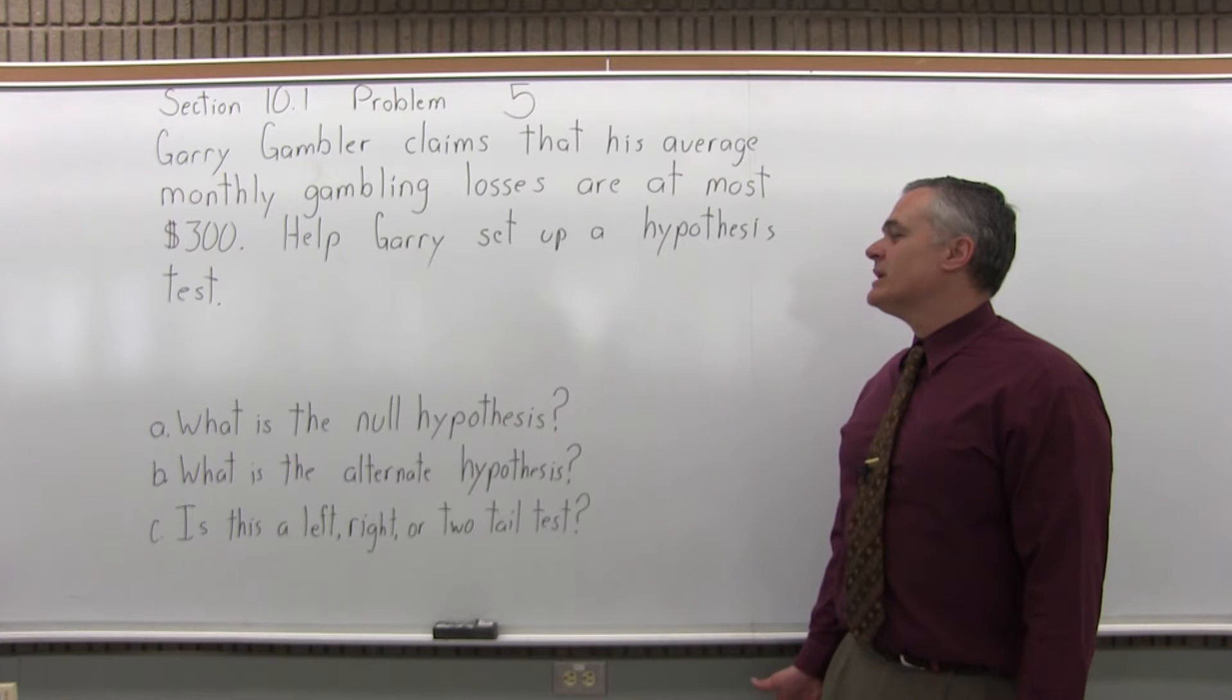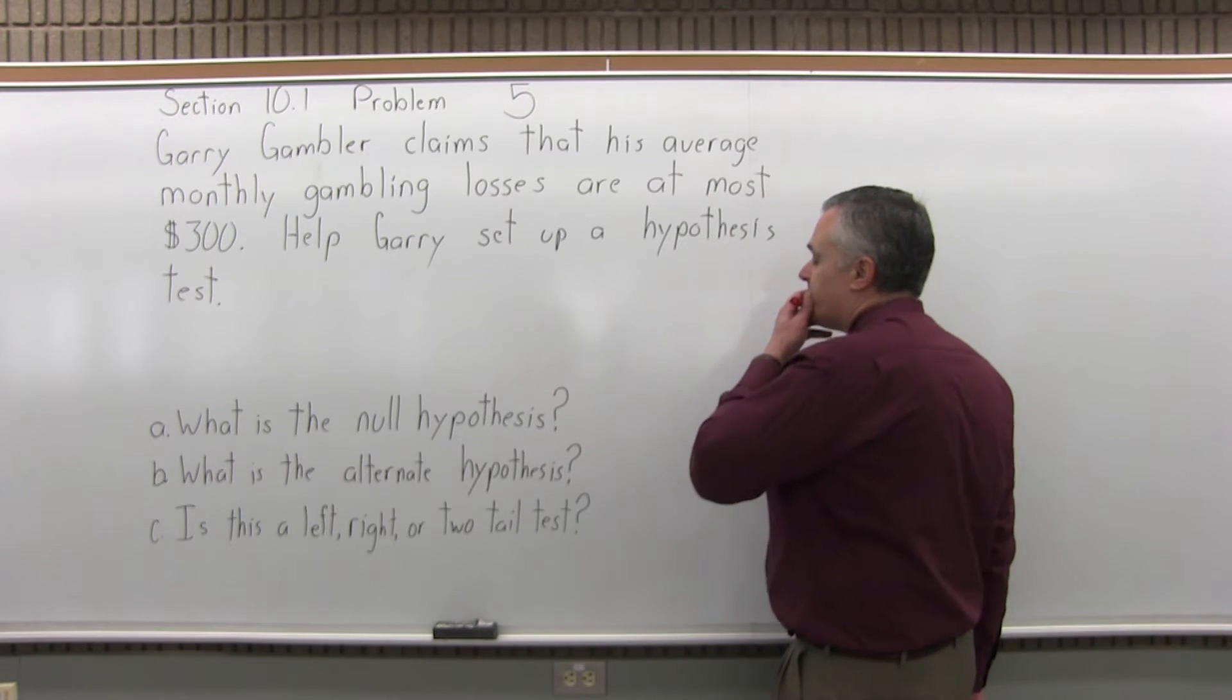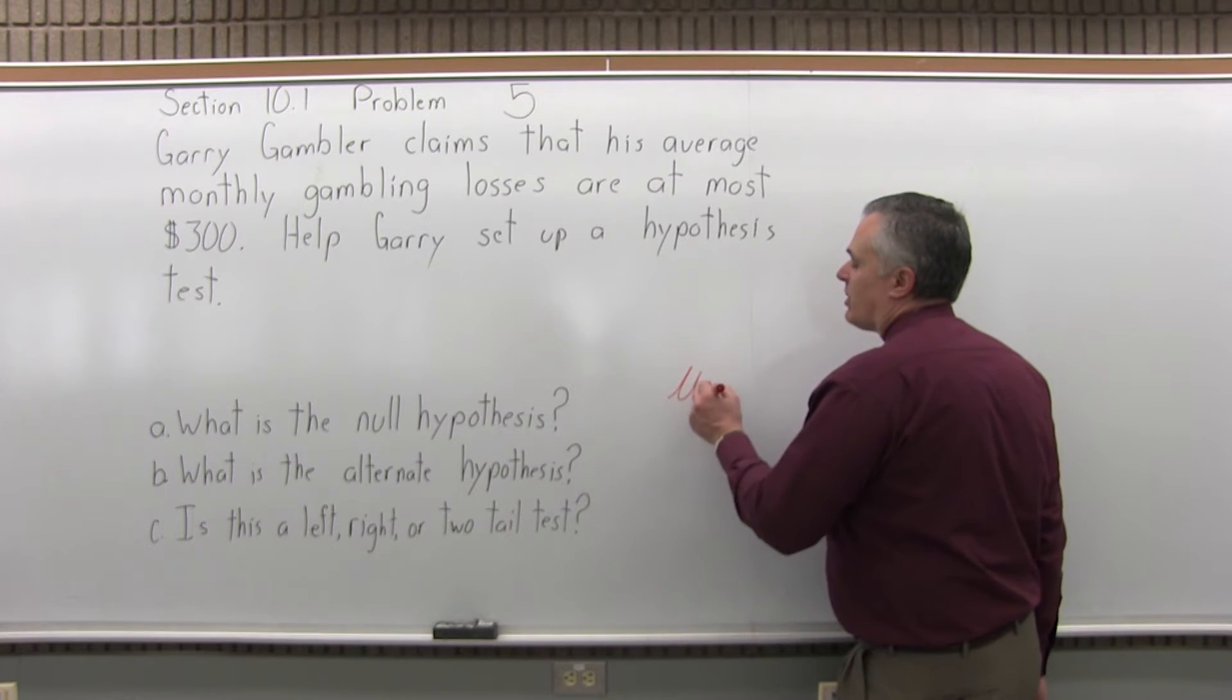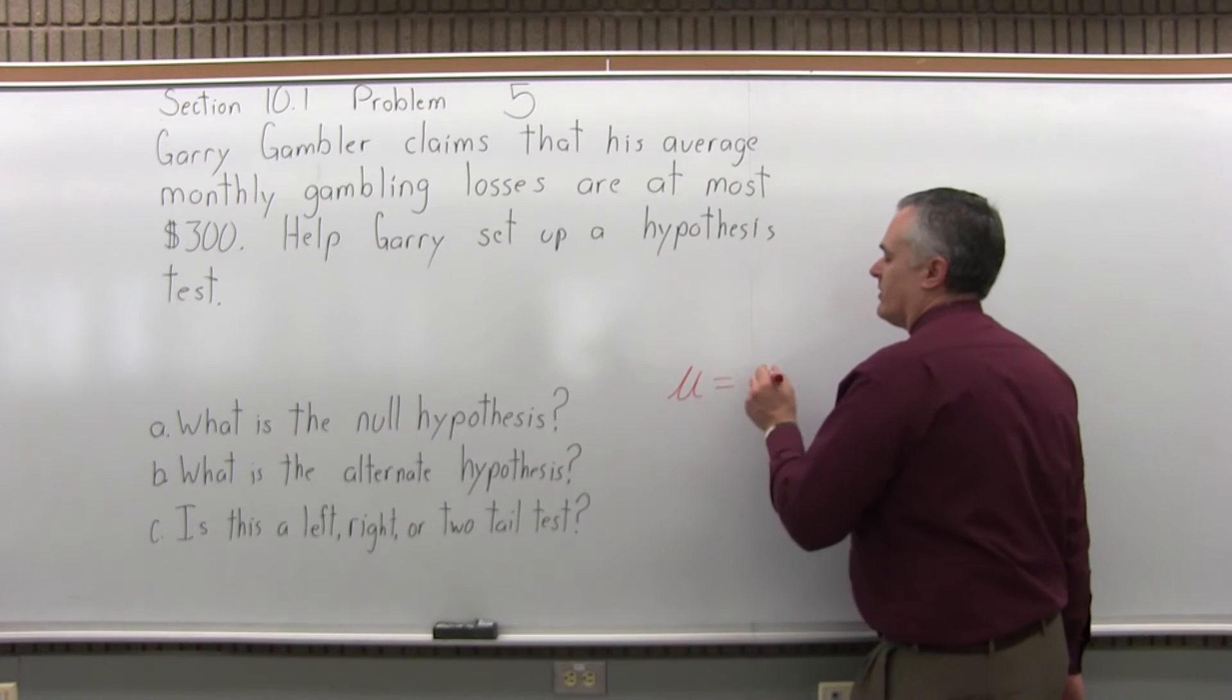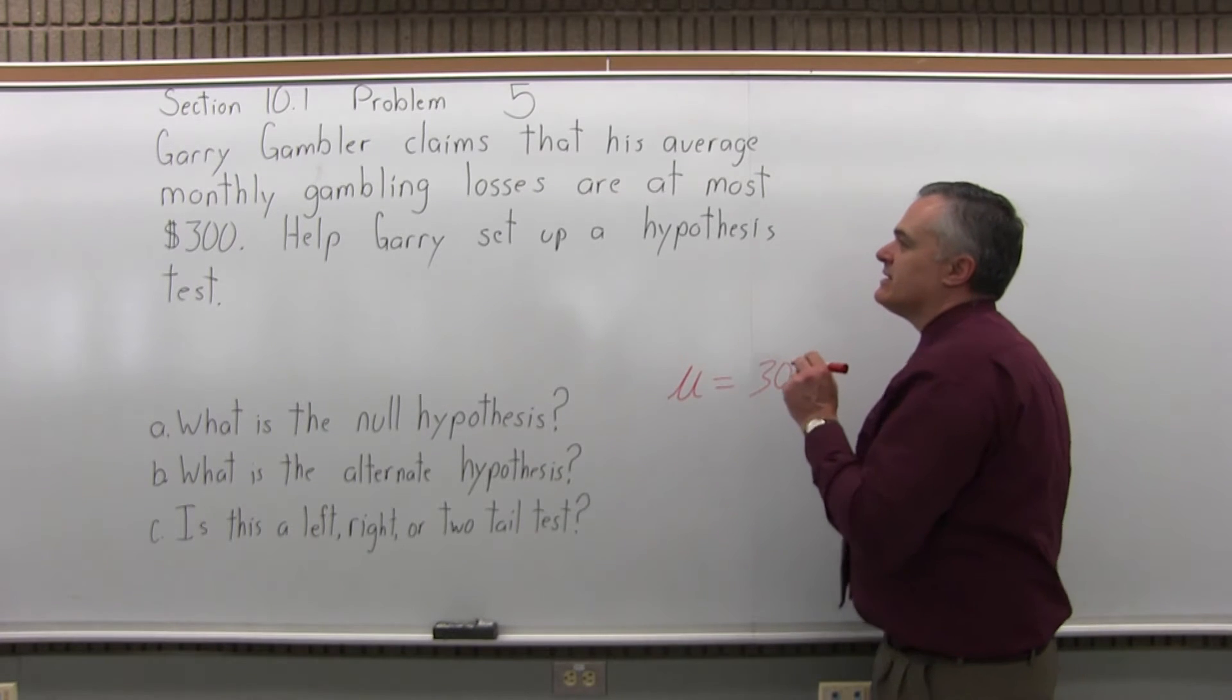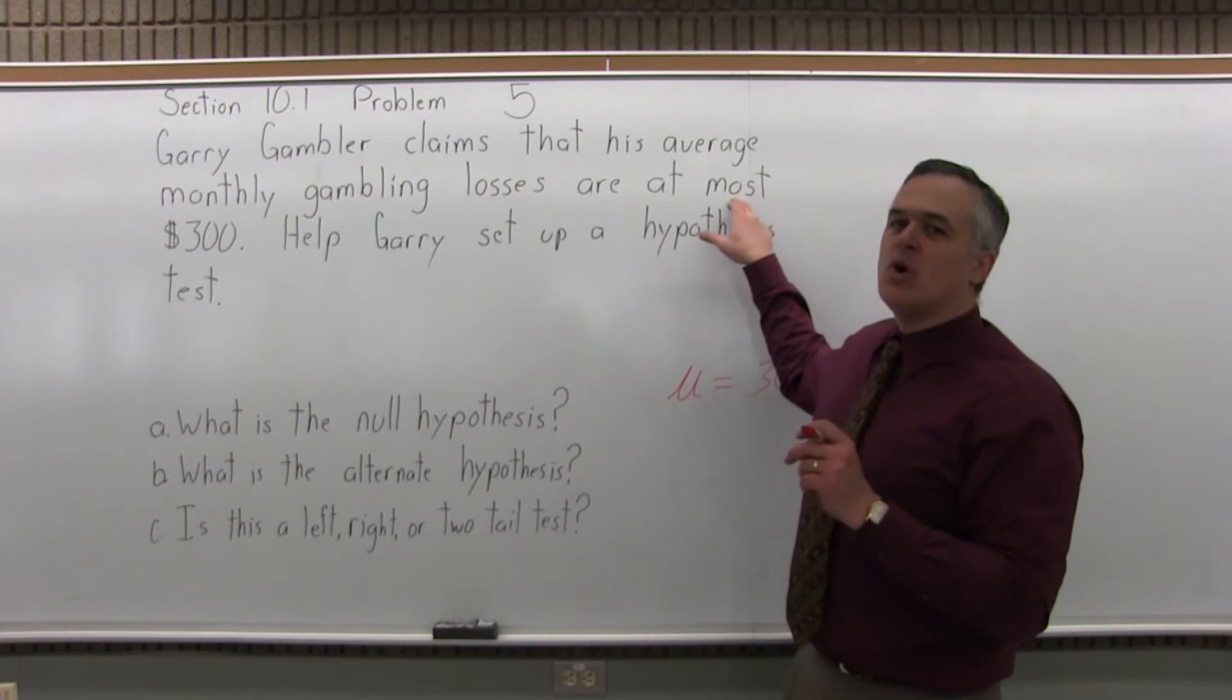So first, what is the null hypothesis? Usually what we have is mu, the population average, equals some number, and the number we're working with here is 300. Now Gary doesn't say that it equals 300 or it's gone up or down. He's saying it's at most 300.